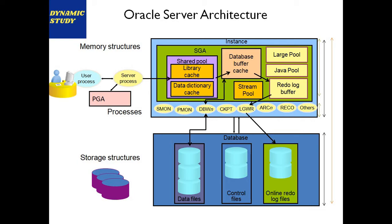Before going forward, let me abbreviate all the keywords — SGA, PGA, and related terms. Oracle instance is a combination of two parts: SGA and PGA. SGA (System Global Area) is the portion allocated in system RAM when we start the Oracle database server. The major parts available in the SGA include the shared pool, which is the most important.